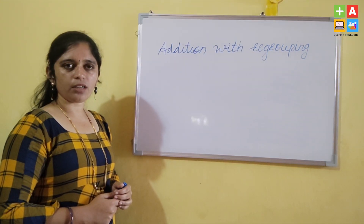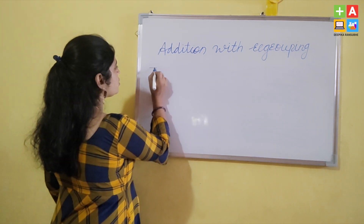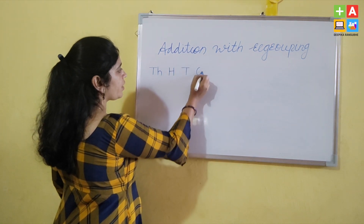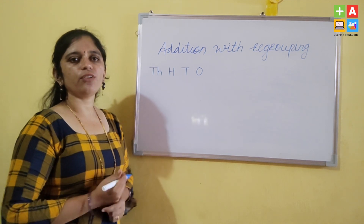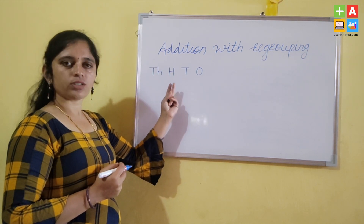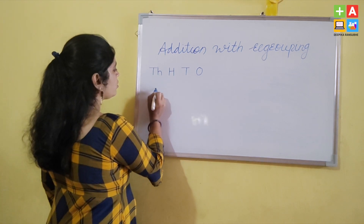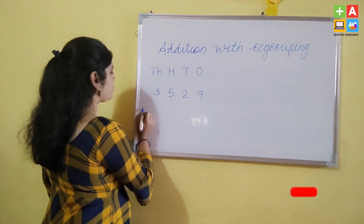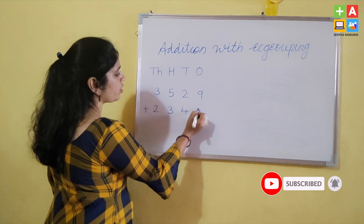To add 4-digit numbers we work with the 1000th place. We arrange the columns as 1000, 100, 10, and 1. Whenever we do addition, we have to arrange the numbers first in the 1000, 100, 10, and 1 columns, and then we do the addition. So I am taking the numbers 3,529 plus 2,344.